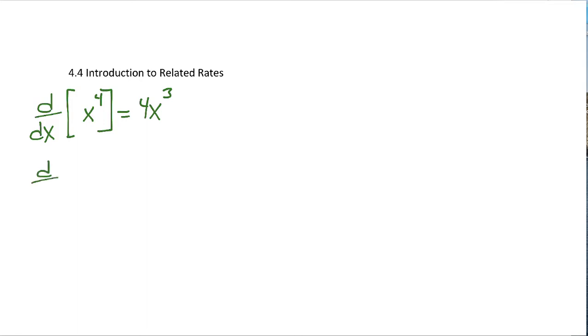But what happens when we take the derivative with respect to x of y to the fourth? In that case, we would have 4y cubed times y prime, or another way of writing it would be 4y cubed times dy/dx, because of that notation for y prime.